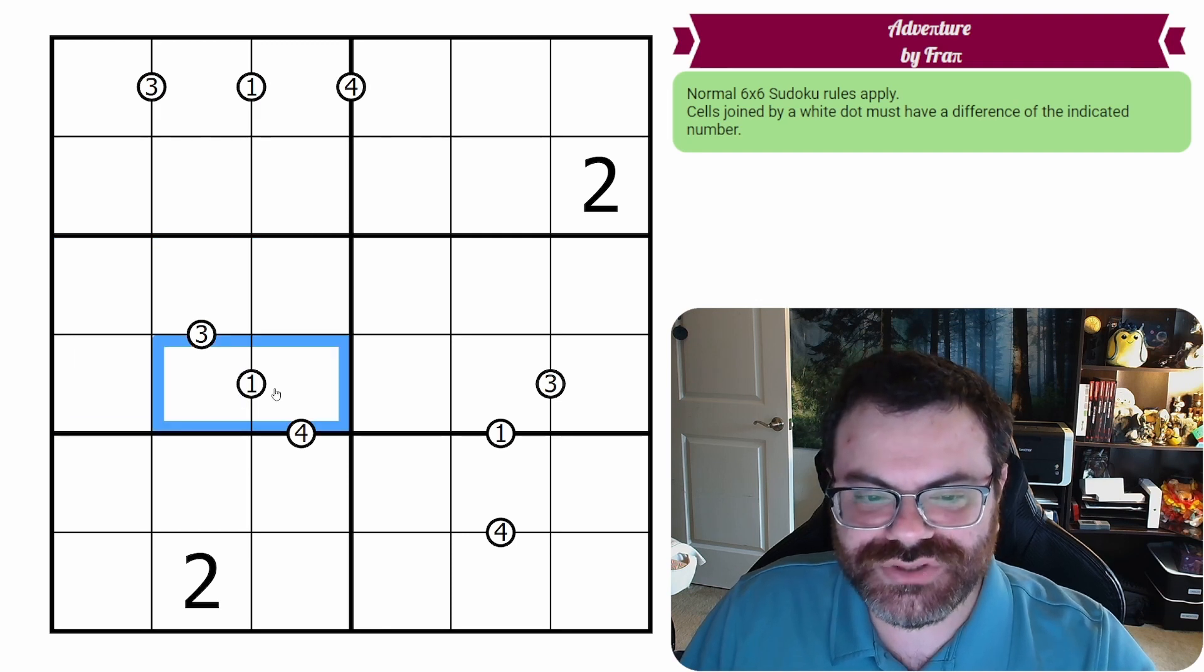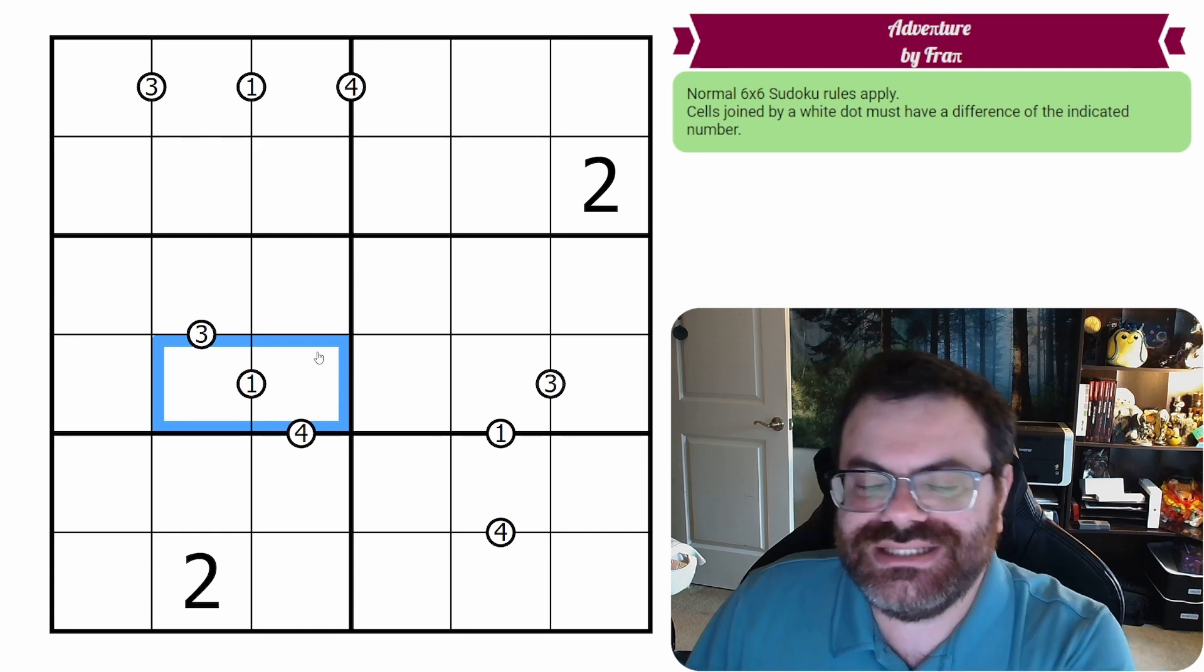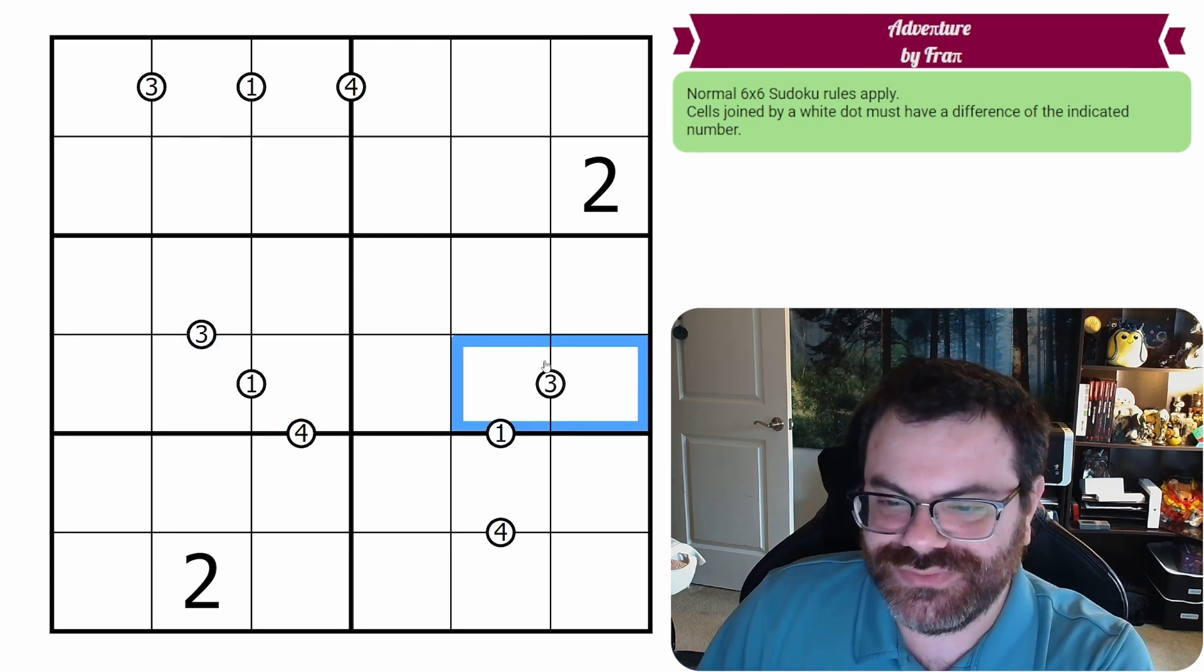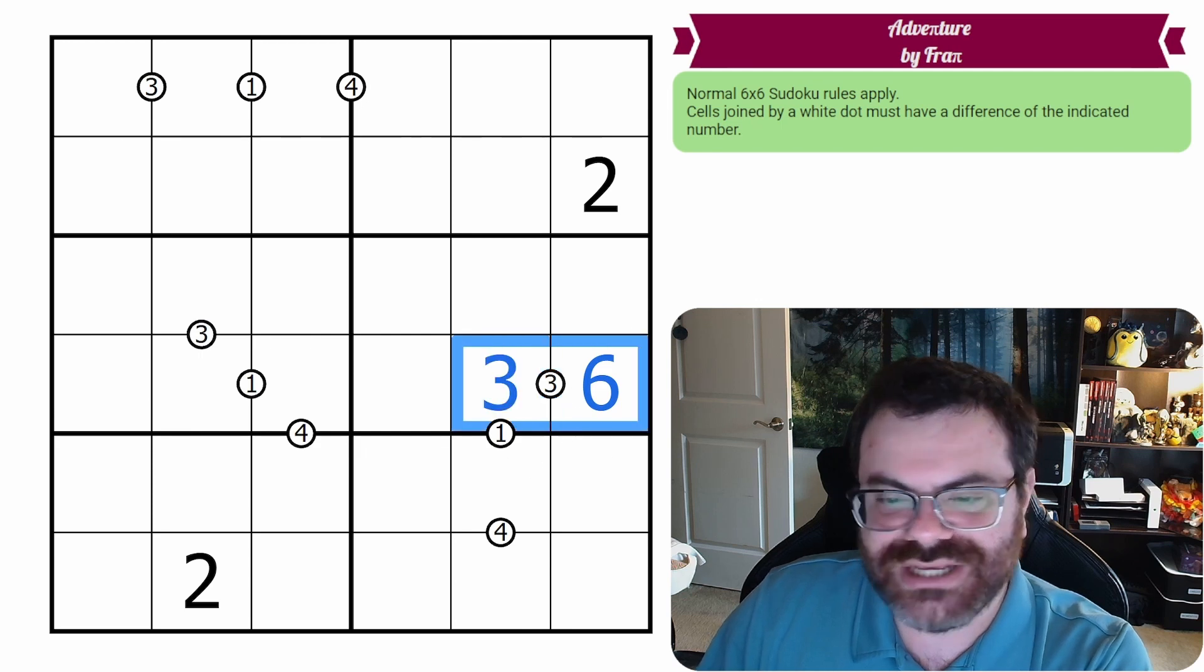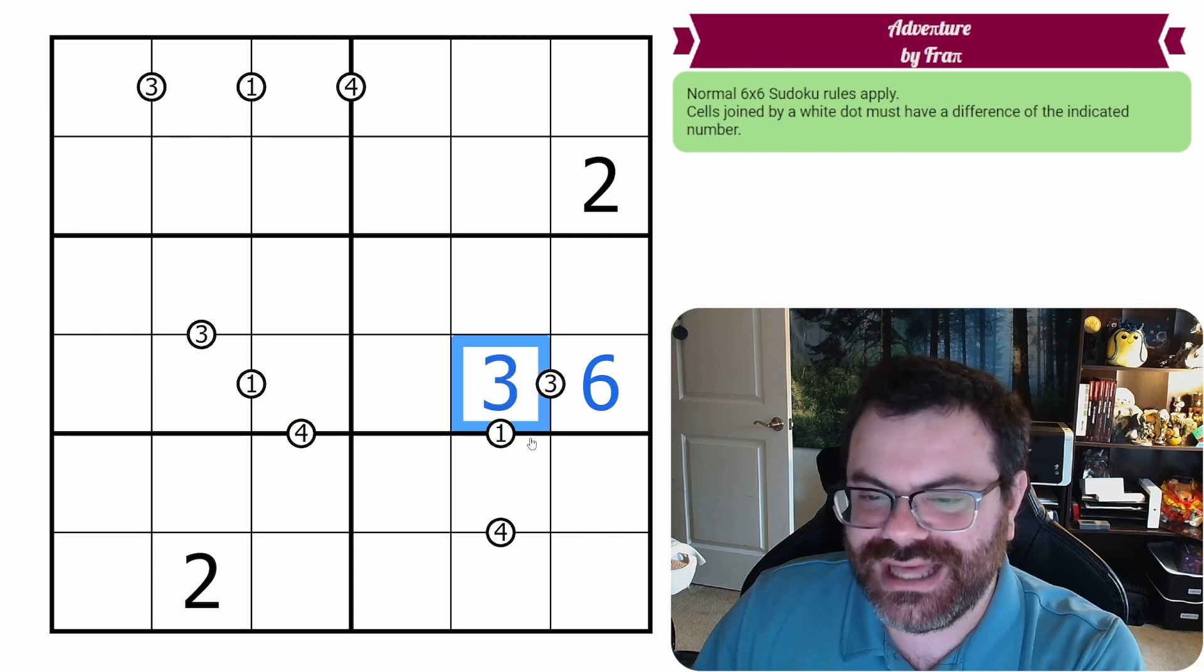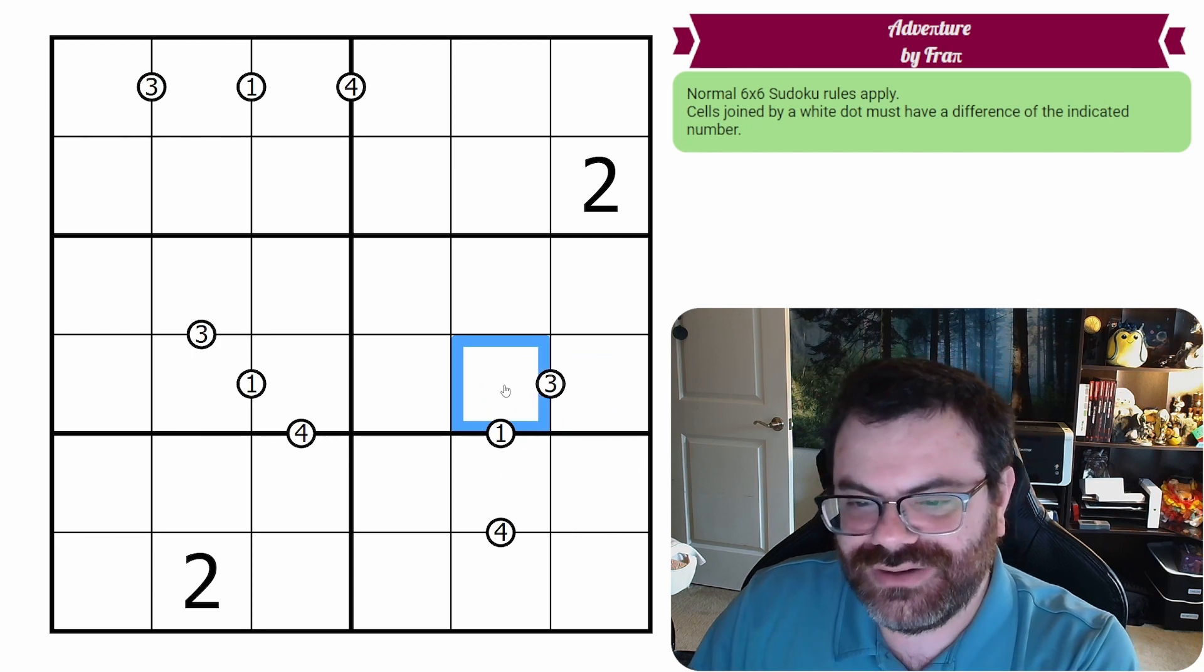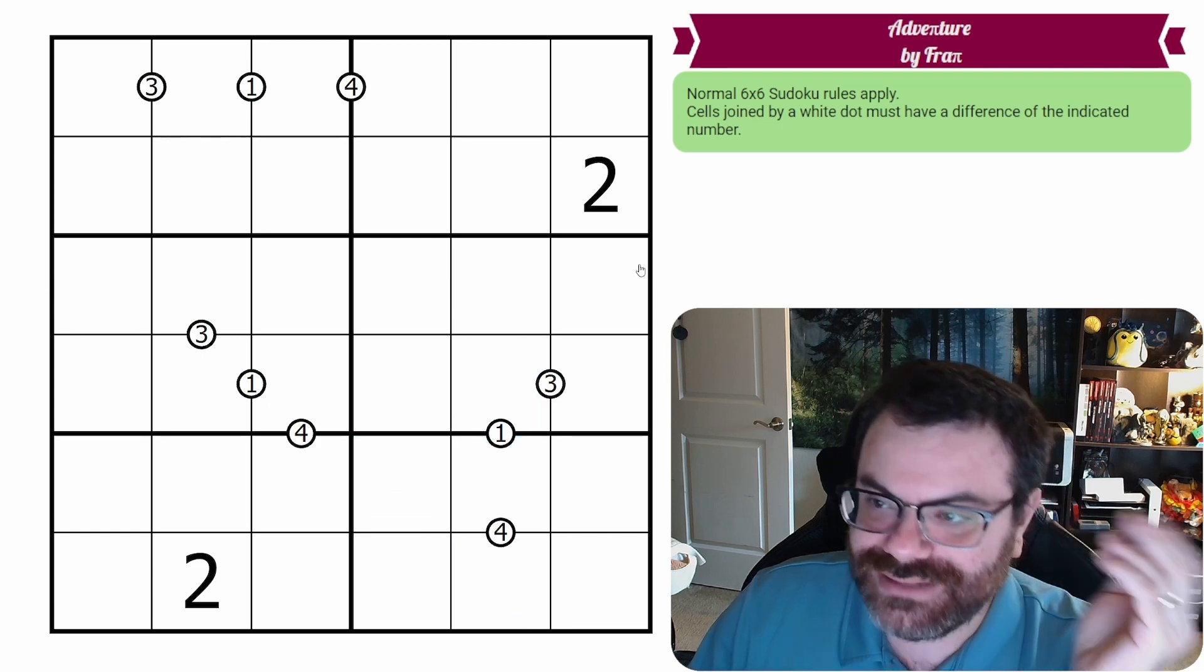We have white dots around the grid with a number in them. That number is the difference between the two cells, the exact difference. So let's say these two have a difference of three. If I put a six here, then I have to put a three here. Can't do a two, that's a difference of four. Can't do a four, that's a difference of two. Got to be a difference of three. That's a difference of one, that's a difference of four.